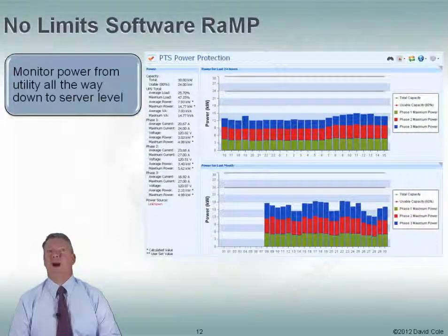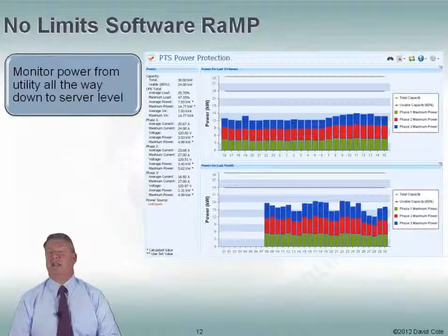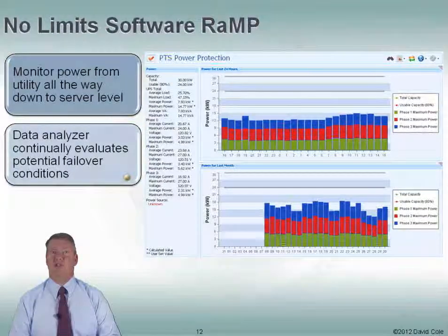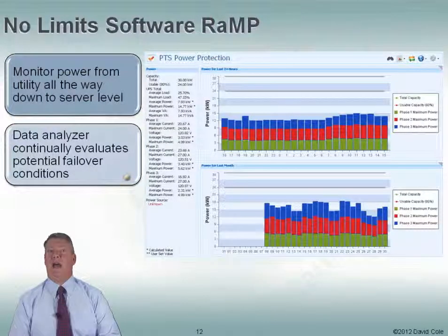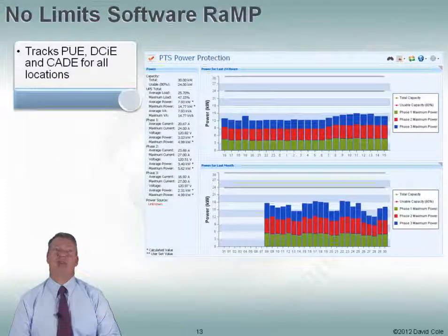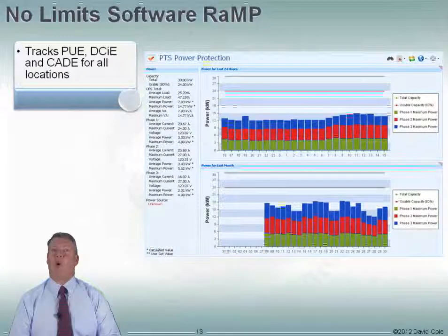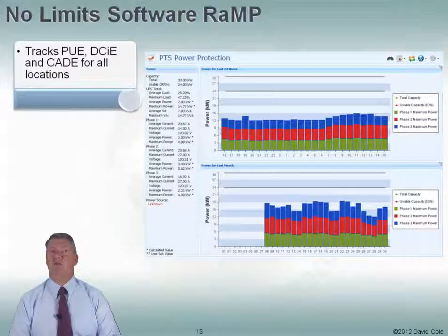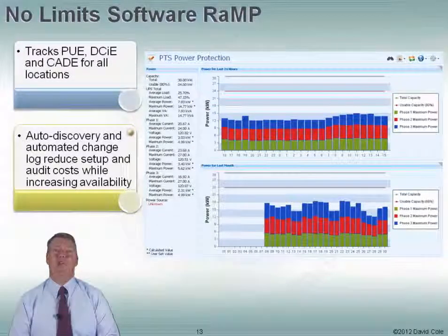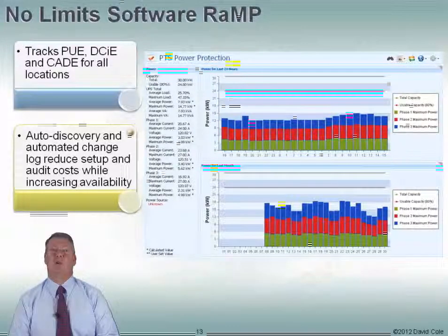No Limits Software RAMP monitors power all the way from the utility down to the server level — it will go down and talk to individual IT devices, which is a little different than some products. It has a data analyzer that runs in the background and continually evaluates potential failover conditions, so if a rack PDU were to fail, you'd know what impact that would have. It tracks PUE (power usage effectiveness), DCIE (data center infrastructure efficiency), and CAID (corporate average data center efficiency) for all locations. Because it monitors all the way down to CPU usage, it can track CAID, which takes into account IT efficiency. It supports auto discovery and automatic change logging, which reduces setup and audit costs and increases availability.